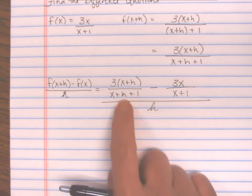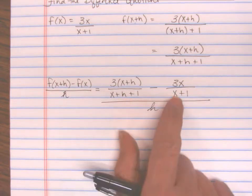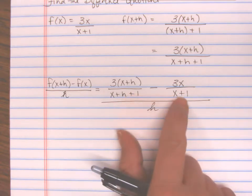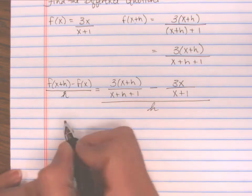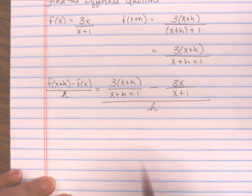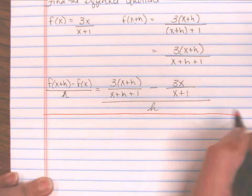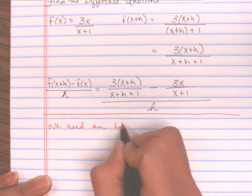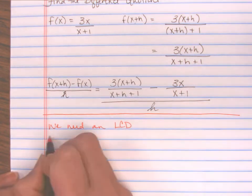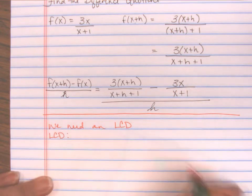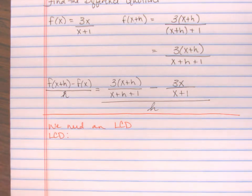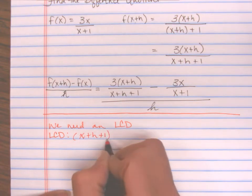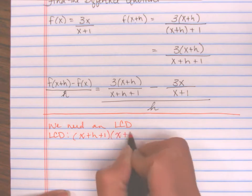Before I can subtract the numerators, I have to make sure they have the same denominator — and they don't here. So I'm going to need to find an LCD. The LCD is the product of both denominators: (x+h+1) and (x+1).